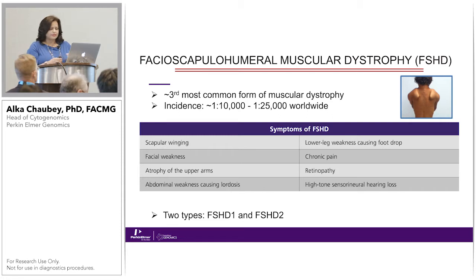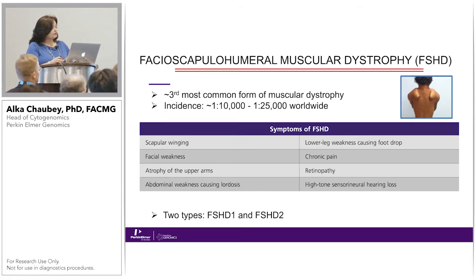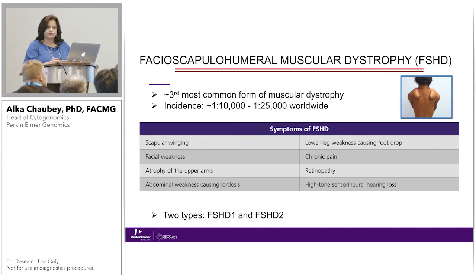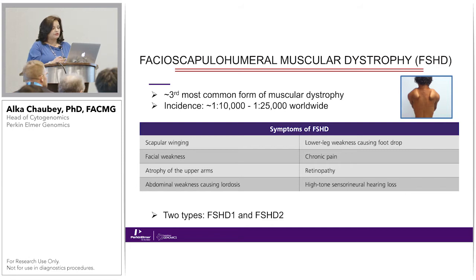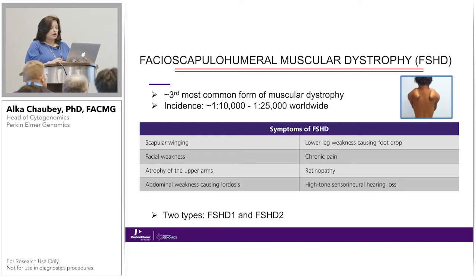This disorder — especially if you look at this image from one of the manuscripts — the symptoms are really classic. However, there is a lot of differential seen in literature across families and modes of inheritance: scapular winging, lower leg weakness, facial weakness, retinopathy, atrophy of the upper arms, and abdominal weakness are all very common symptoms of FSHD.